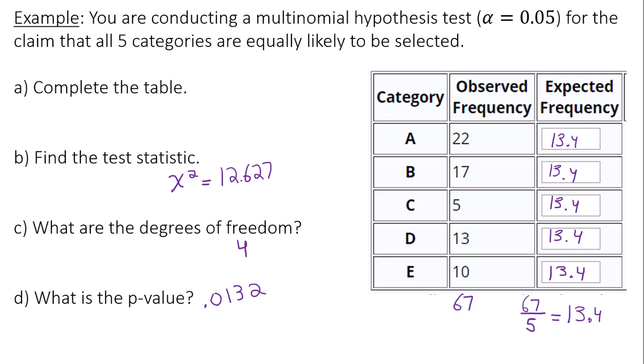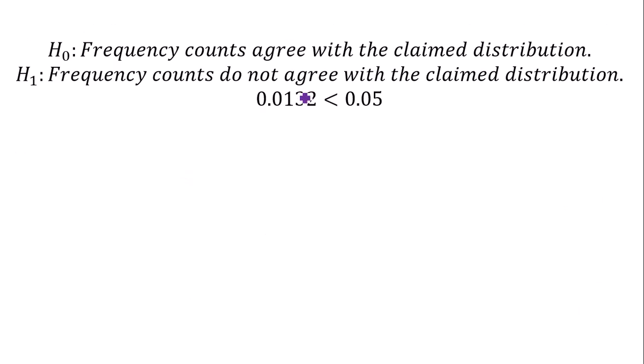Now to come to a conclusion about our claim, we need to compare the p-value to alpha. In the goodness of fit test, your null hypothesis is always that the frequency counts agree with the claimed distribution, and the alternative hypothesis is that frequency counts do not agree with the claimed distribution.